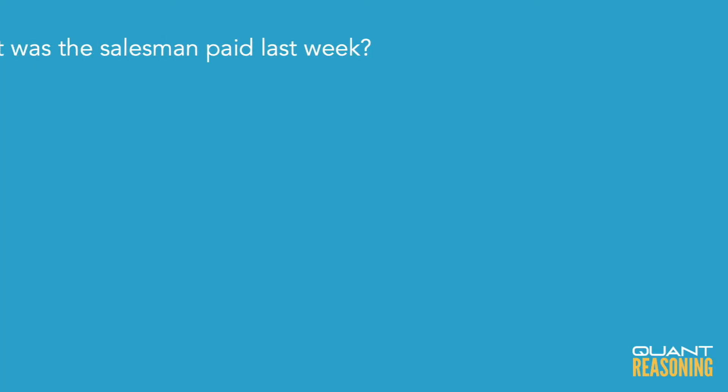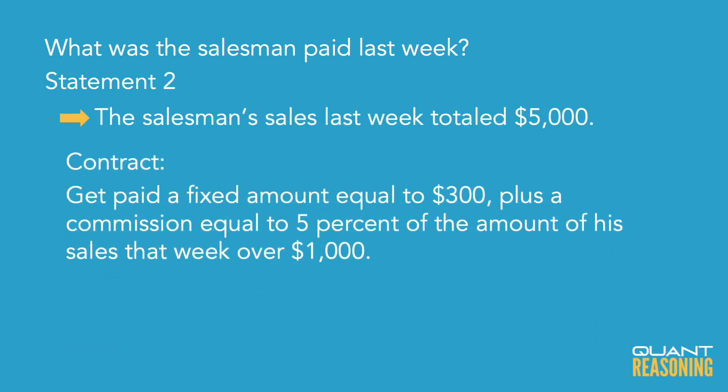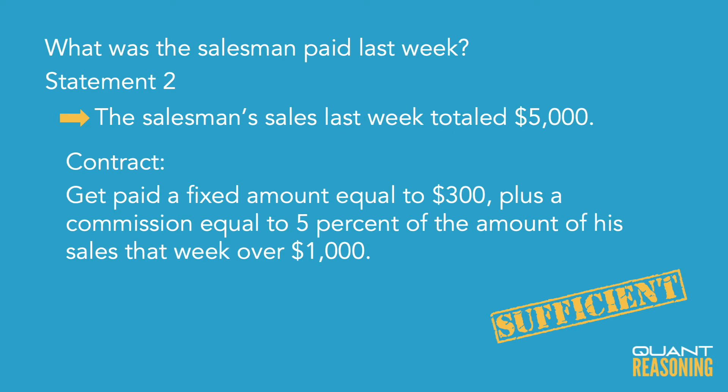So then I look at the statements and try to figure out if I can work backwards from this information to determine what my sales were last week, because if I know that, I can figure out how much money I'm owed. Statement two seems easier to evaluate because it tells me exactly what my sales were last week. If I know my sales and I have the contract in front of me, then statement two is clearly sufficient on its own, and I should eliminate the answer choices that claim it's not.